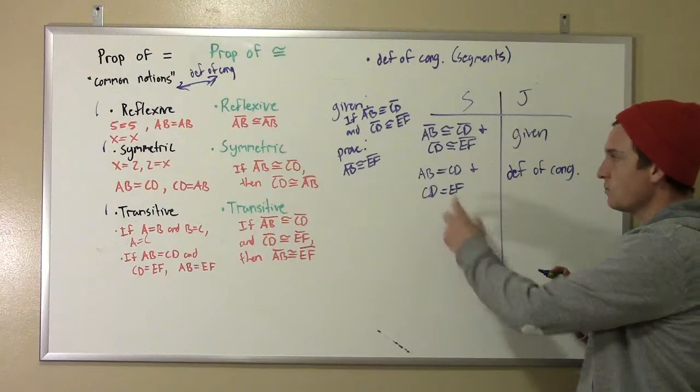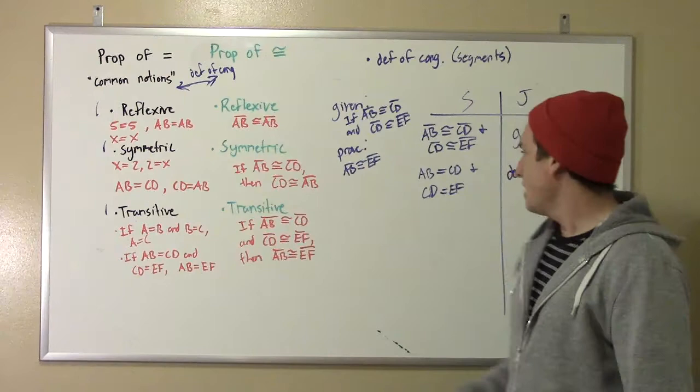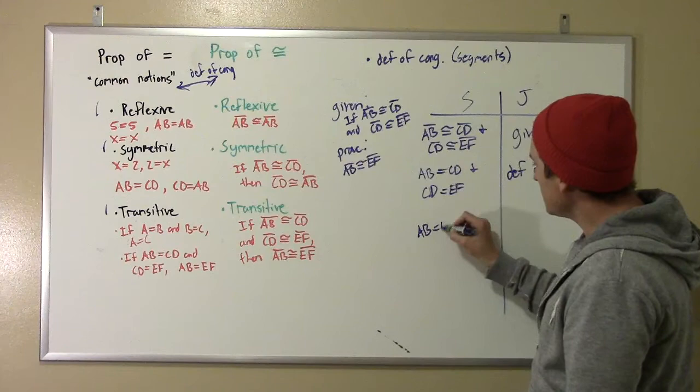The next statement then, of course, is, well, now that we're in equality, we're allowed to use our transitive property of equality. So AB equals CD, and CD equals EF, well, that means that AB is equal to EF, right? We're allowed to use this. We're assuming this is true.